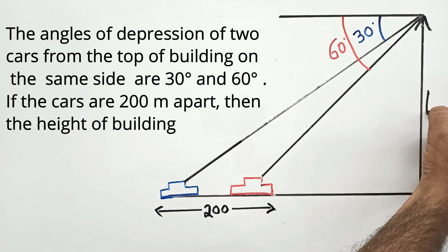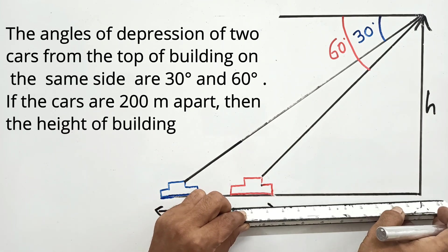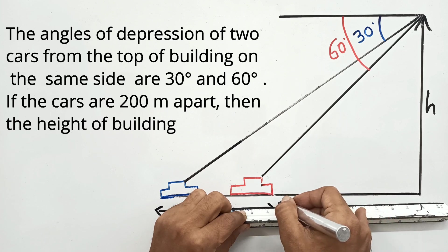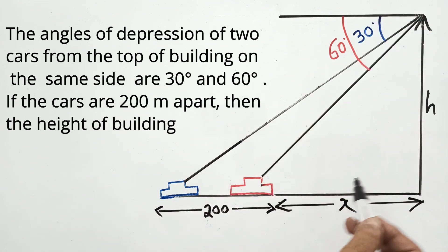The height of the building is h, and the distance from the foot of the building to this car is x. The distance from the foot to the other car is x plus 200.